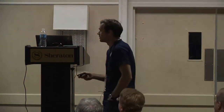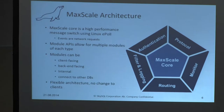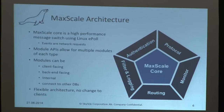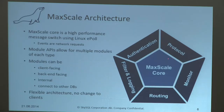If you look at the architecture of MaxScale, this is kind of the beauty of it. It's built in a very modular fashion. There's a MaxScale core, which is basically a message bus using Linux ePoll - it sends messages between different modules. The modules are in five different categories, and you can have multiple instances of each running in the same MaxScale instance. For example, you could have multiple routers or multiple protocols running. It's a very flexible architecture.